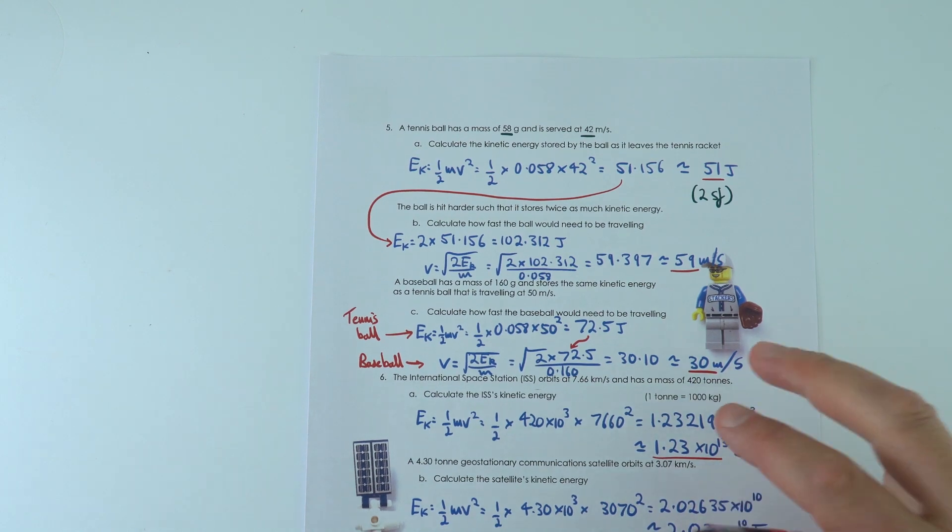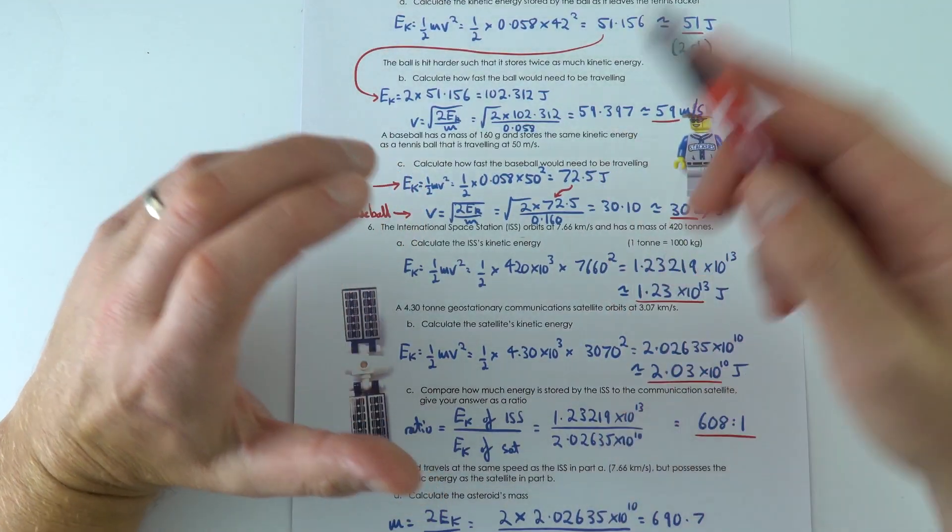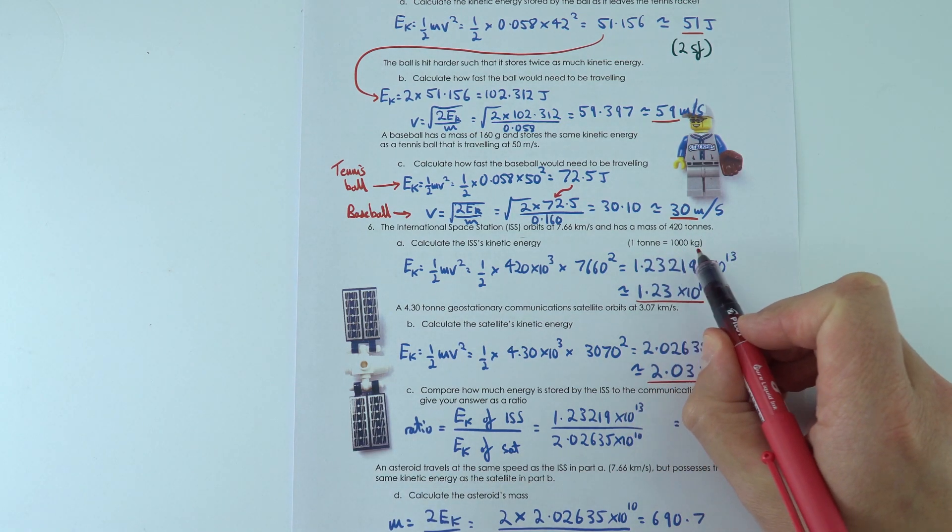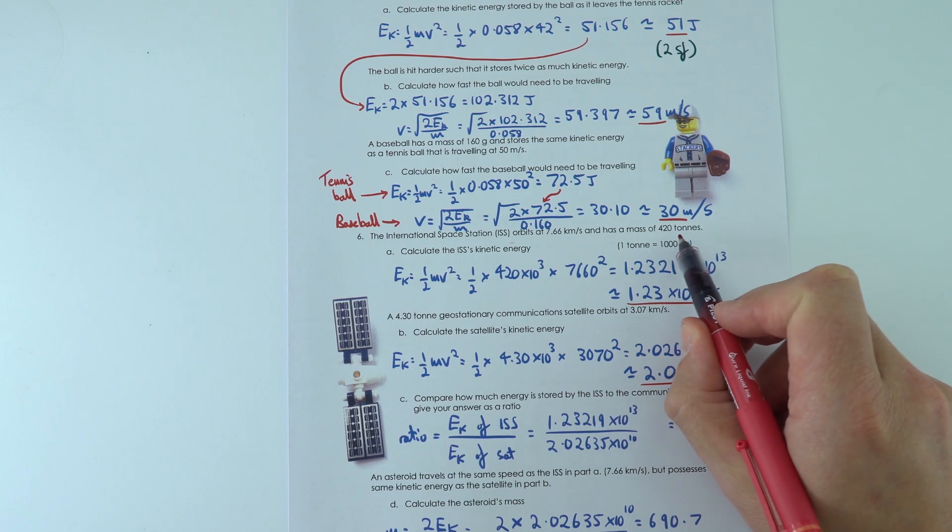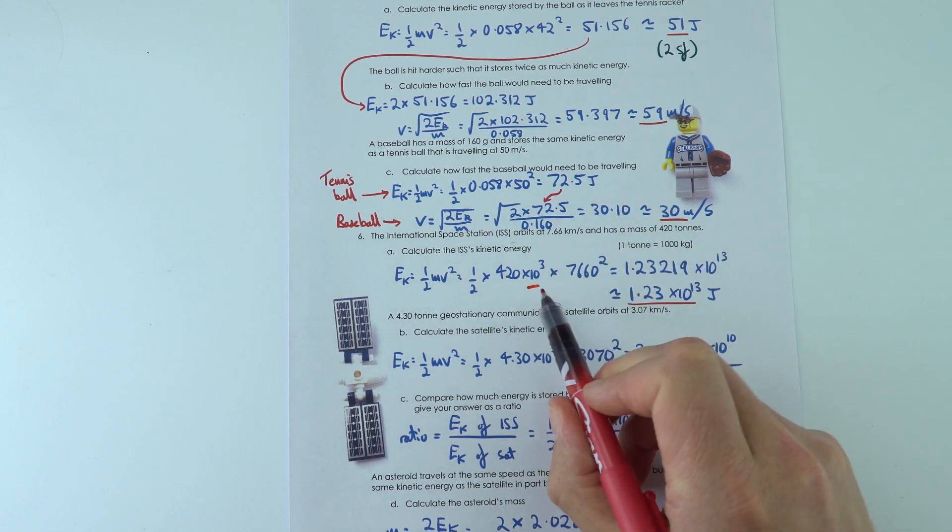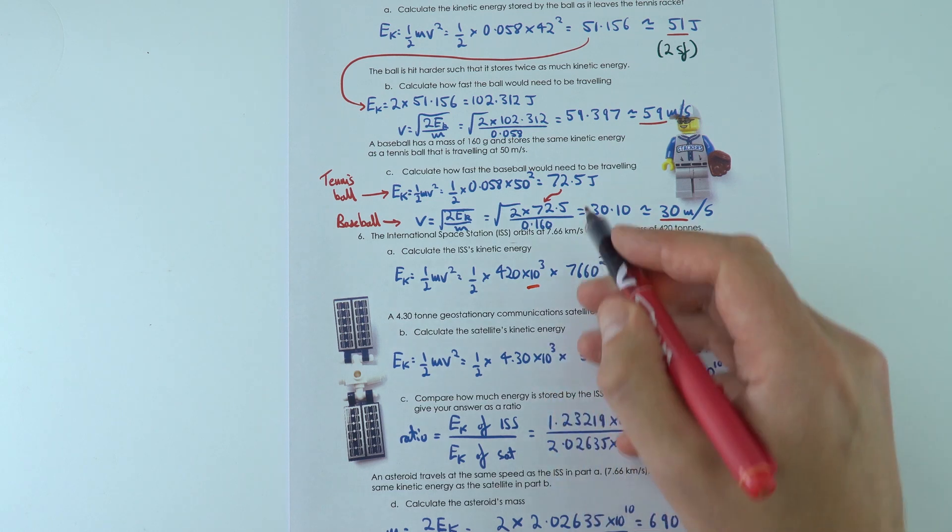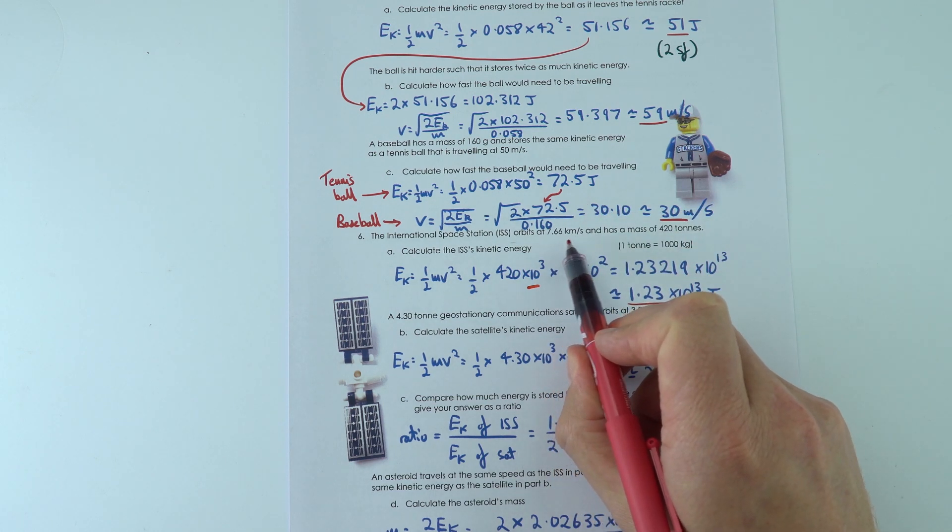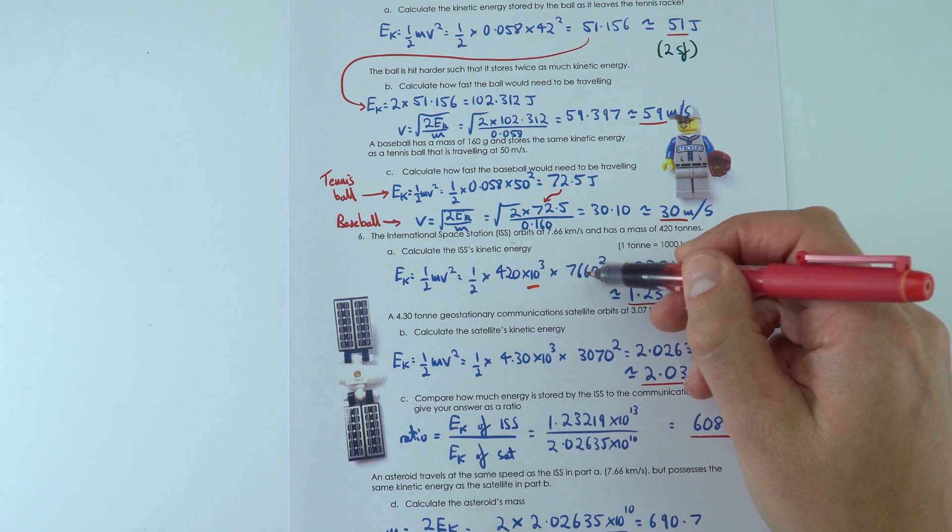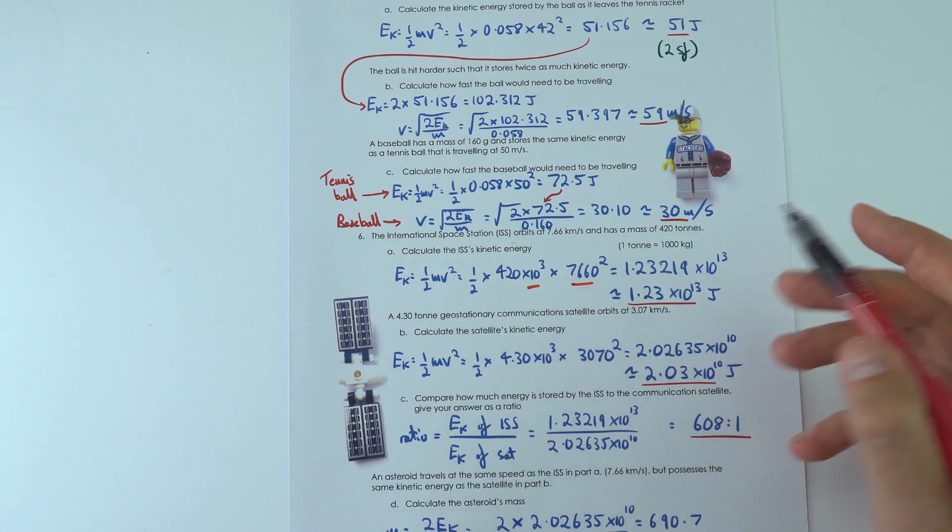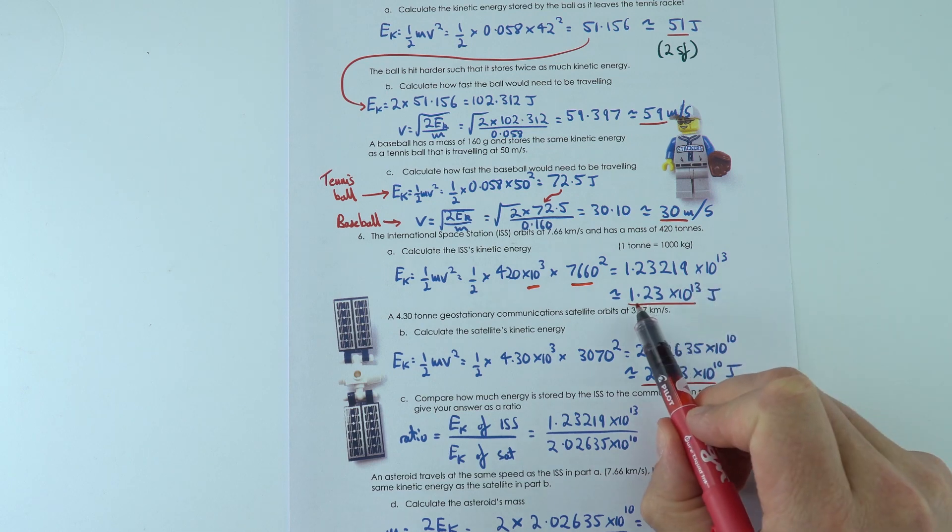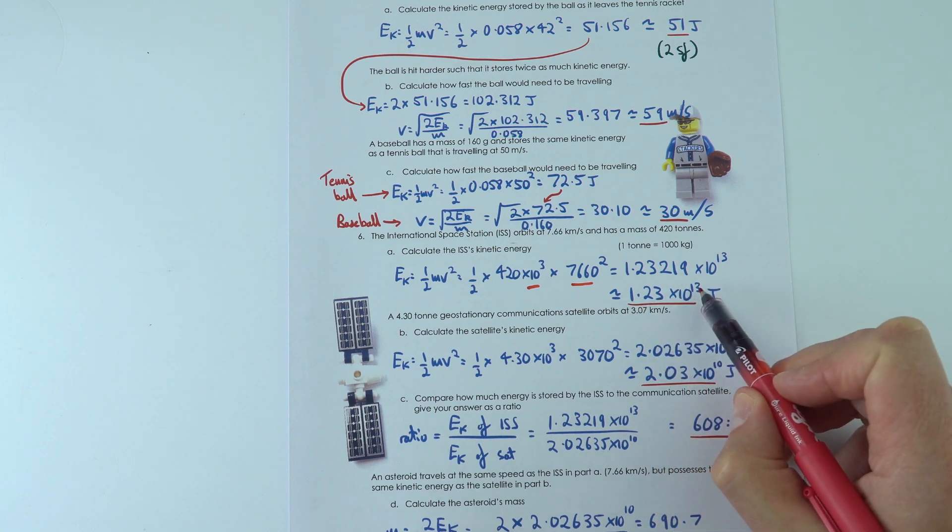And the next thing we looked at—some really big values. This is what happens maybe when we're looking at things in space. So one tonne is a thousand kilograms, so we had to convert this mass in tonnes and I multiplied it by 10 to the 3 to show that we converted into kilograms. And then I had a speed of 7.66 kilometers per second—that's incredible, that's seven thousand six hundred and sixty meters per second. So I put these numbers in to find that standard form was the only way I could show my answer because it was so big: 1.23 times 10 to the 13 joules.